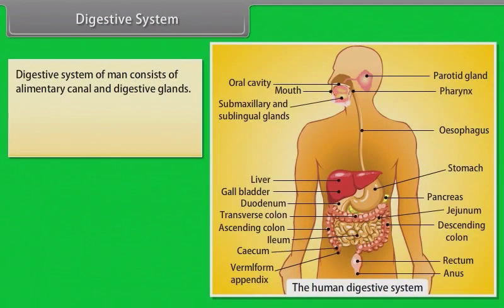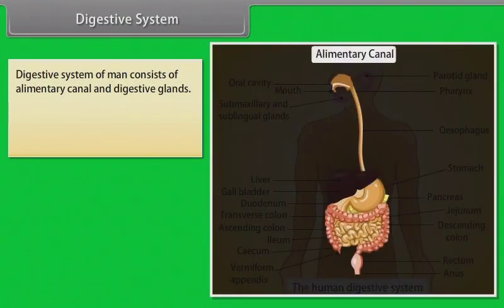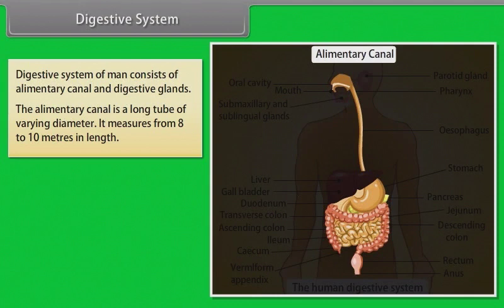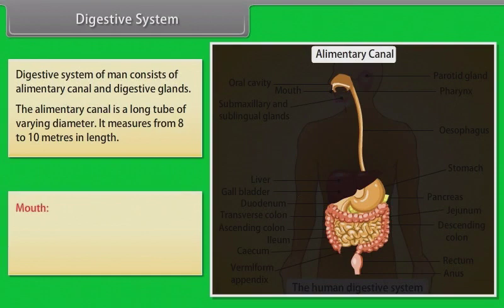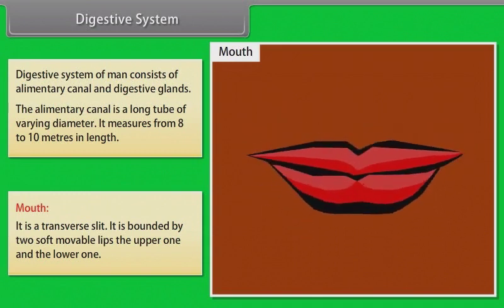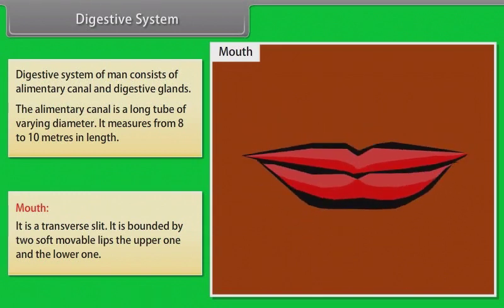The digestive system of a human consists of the alimentary canal and digestive glands. The alimentary canal is a long tube of varying diameter, measuring 8 to 10 meters in length. The first part of the alimentary canal is the mouth, which is a transverse slit bounded by two soft movable lips — the upper one and the lower one.